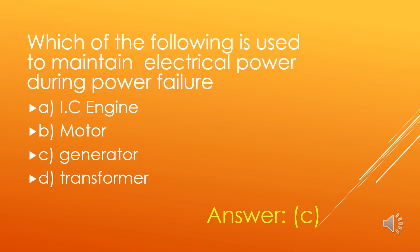Which of the following is used to maintain electrical power during power failure? A. IC Engine, B. Motor, C. Generator, D. Transformer. We use a diesel generator set during power failure or power cut seasons. Here, the diesel engine is coupled with a generator. The diesel engine generates mechanical energy, and the generator converts that mechanical energy into electrical energy. So, option C is the right answer.